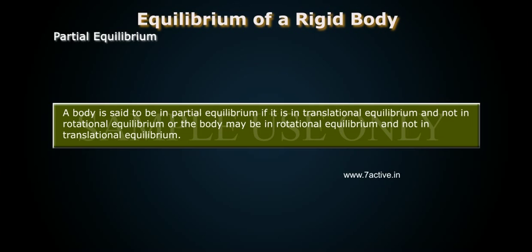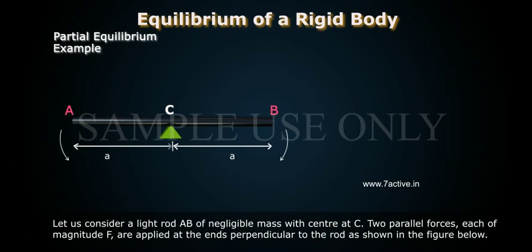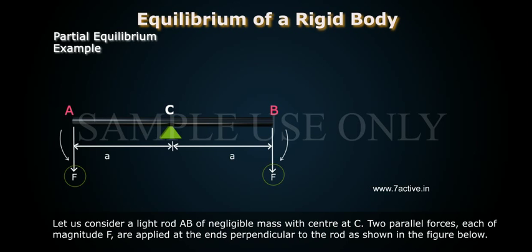A body is said to be in partial equilibrium if it is in translational equilibrium but not in rotational equilibrium, or the body may be in rotational equilibrium but not in translational equilibrium. As an example, consider a light rod AB of negligible mass with center at C. Two parallel forces, each of magnitude F, are applied at the ends perpendicular to the rod as shown in the figure.